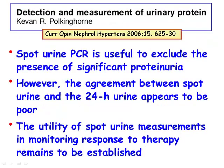For all these reasons, in 2006, a paper published in Current Opinion in Nephrology and Hypertension concluded: spot urine PCR is useful to exclude the presence of significant proteinuria — to rule it out. But once we have significant proteinuria, the agreement between spot urine and 24-hour appears to be poor, and the utility of spot urine measurements in monitoring and response to therapy remains to be established.